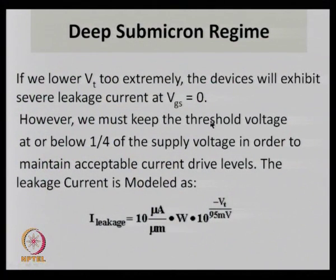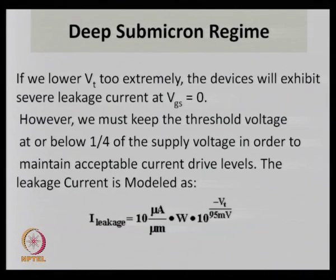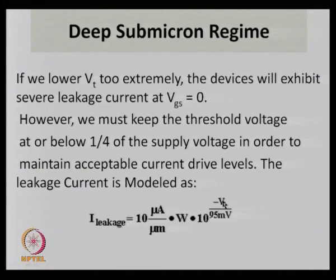A simplified leakage current model is: I-leakage = 10 μA/μm × width × 10^(−Vt/95 mV). By adjusting transistor width and threshold voltage, leakage currents can be controlled. For complex logic blocks such as a 2-input NAND gate, there are four possible input combinations, and for each we examine the amount of leakage current flowing. An effective gate width can be assigned for the worst case, expressed as a function of the number of transistors in the logic.